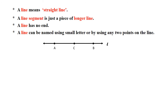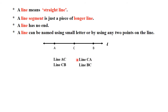Consider any third point on that line. If we want to name this line, we can use any two points. Using points A and C, we write line AC; flipping it gives line CA. Using points C and B, the name is line CB or line BC. Using points A and B, we get line AB or line BA. We can also write it using a small letter as line L.